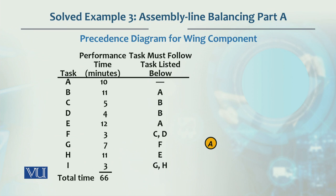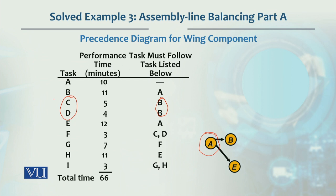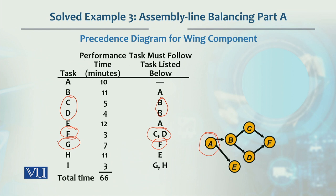In the precedence diagram, A will be performed first. After completing task A, two tasks — B and D — will be performed. After D, tasks C and G are performed. After D, task H is performed.